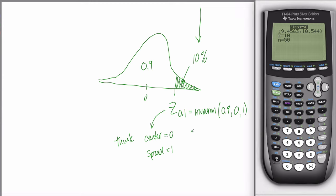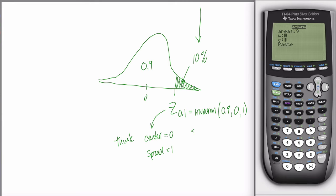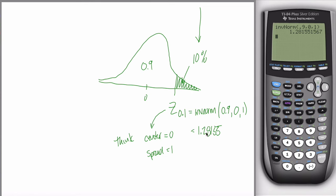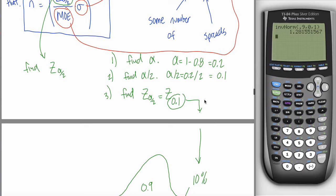Hit second, then variables, select inverse norm. Area to the left of the point is 0.9, center and spread are 0 and 1. Hit enter — it spits out 1.28155. That's Z_(α/2). Step three done: 1.28155.